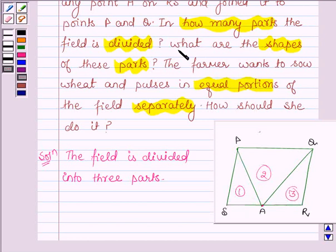Next we have to answer what are the shapes of these parts? As we can see from the figure, the portion 1, portion 2 and portion 3 all are in triangular shapes. Therefore, we can say that each portion has a triangular shape.